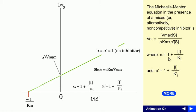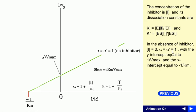Here, α equals 1 plus I divided by Ki, and α' equals 1 plus I divided by K'i. Ki and K'i are dissociation constants: Ki is the enzyme concentration times inhibitor concentration divided by enzyme-inhibitor complex concentration, and K'i is the enzyme-substrate concentration times inhibitor concentration divided by enzyme-substrate-inhibitor complex concentration.